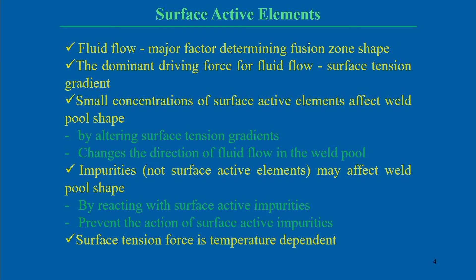Fluid flow is the major factor determining the fusion zone shape. Considering only heat conduction gives us the geometric shape and size of the weld pool, but considering metal flow more accurately predicts the temperature distribution. The flow field modifies the temperature field, making it more accurate than a heat conduction only analysis. The dominant driving force for fluid flow is the surface tension gradient, and very small concentrations of surface active elements actually influence the surface tension force, which then influences the metal flow pattern that decides the shape of the weld pool.